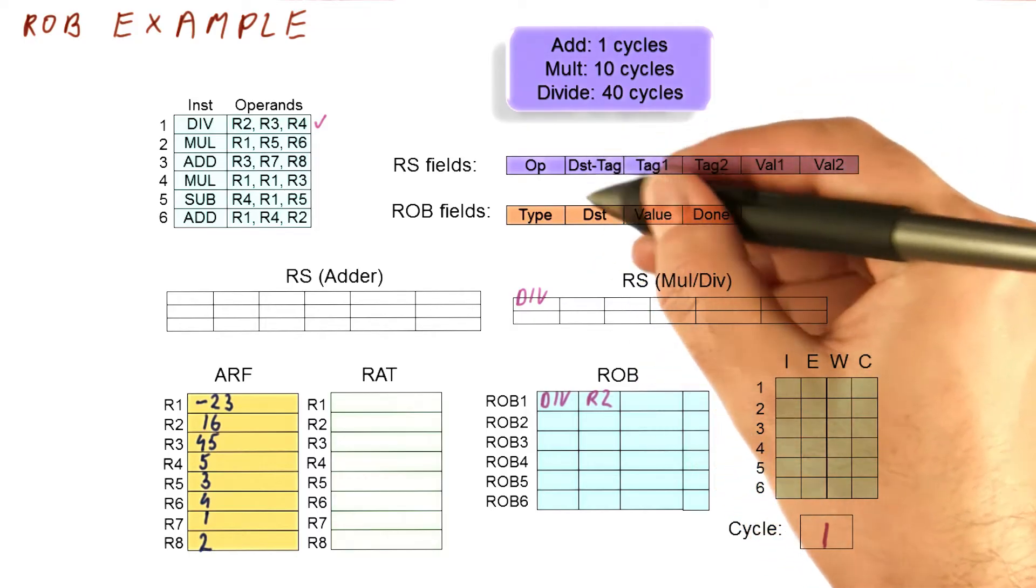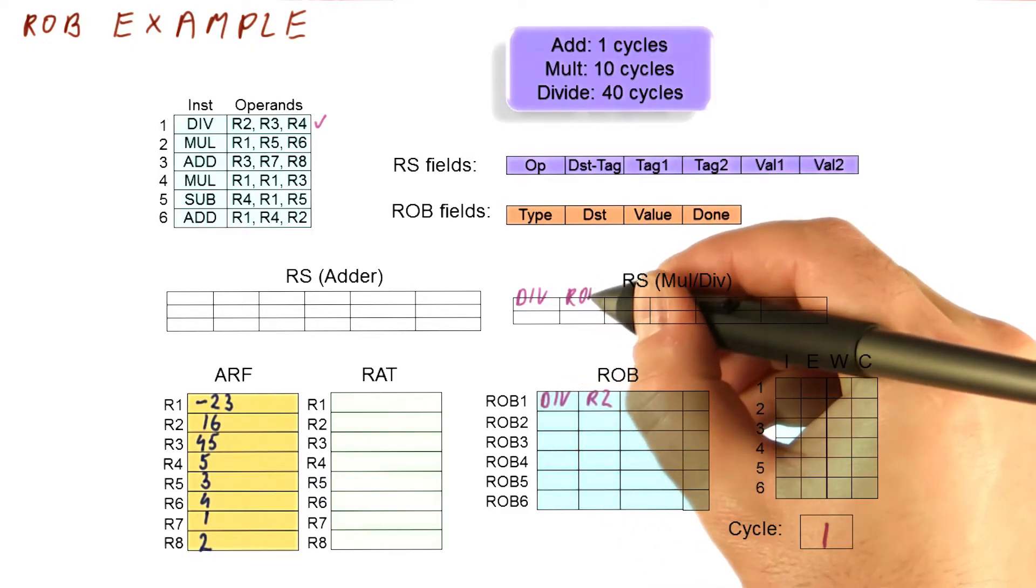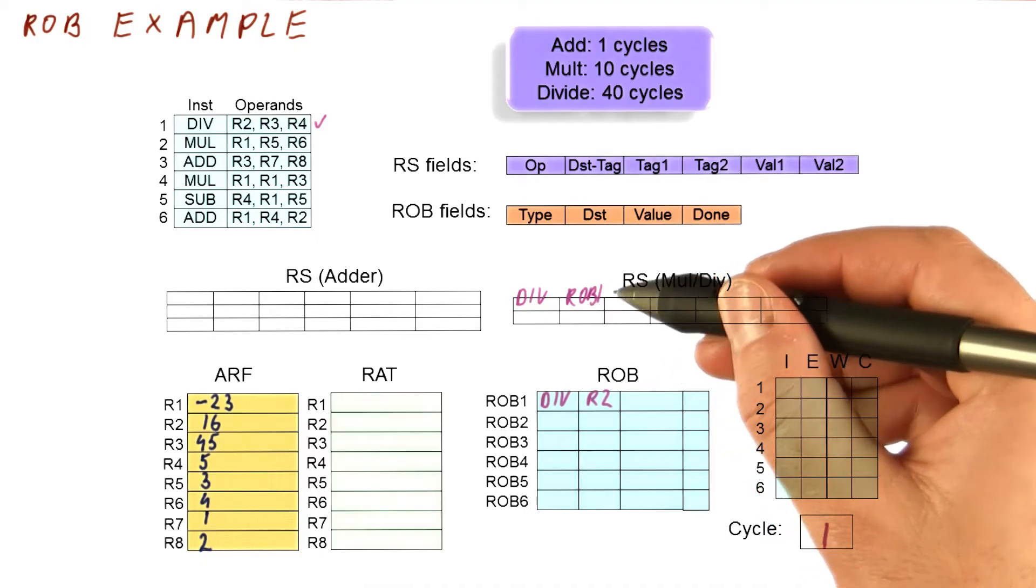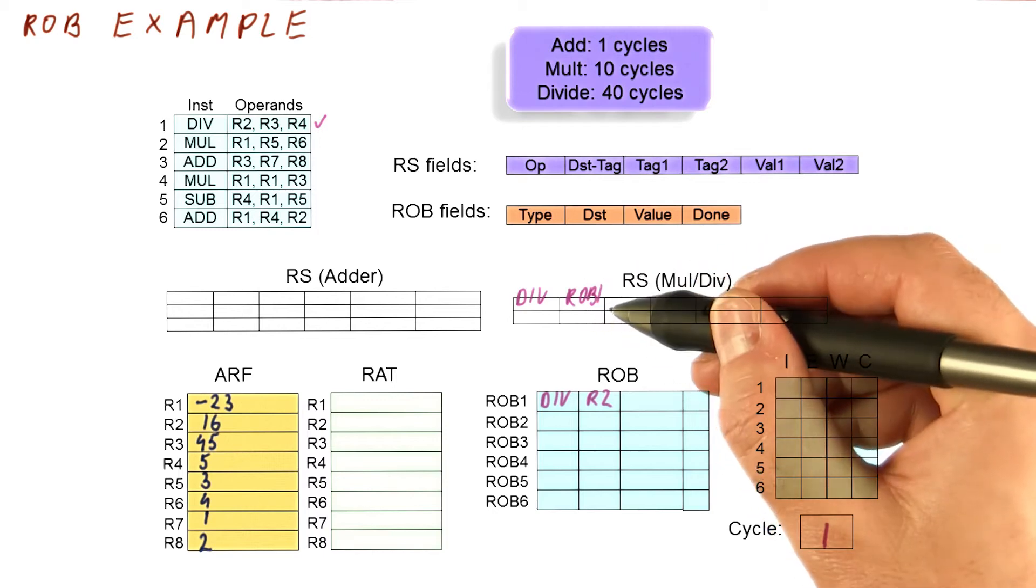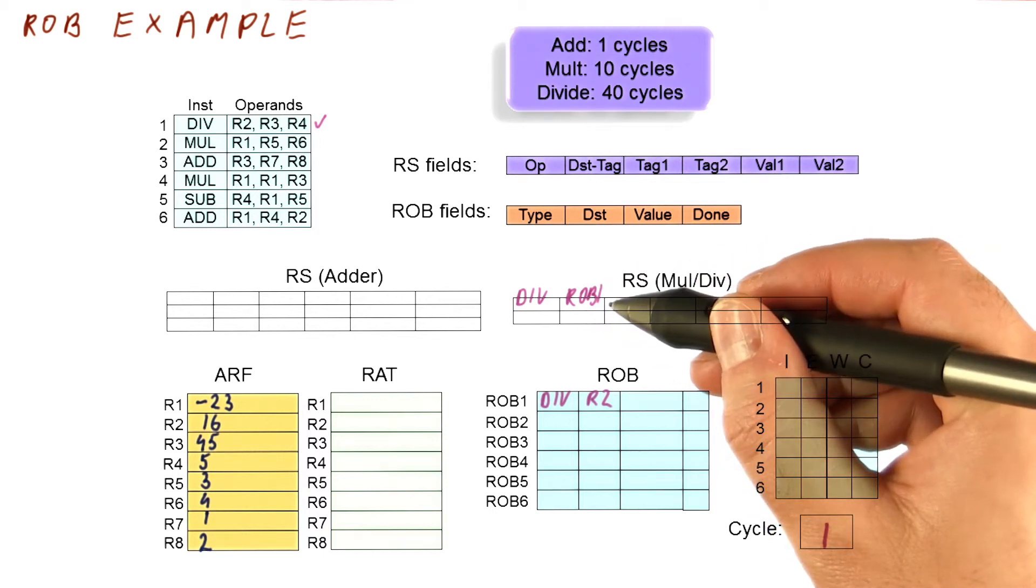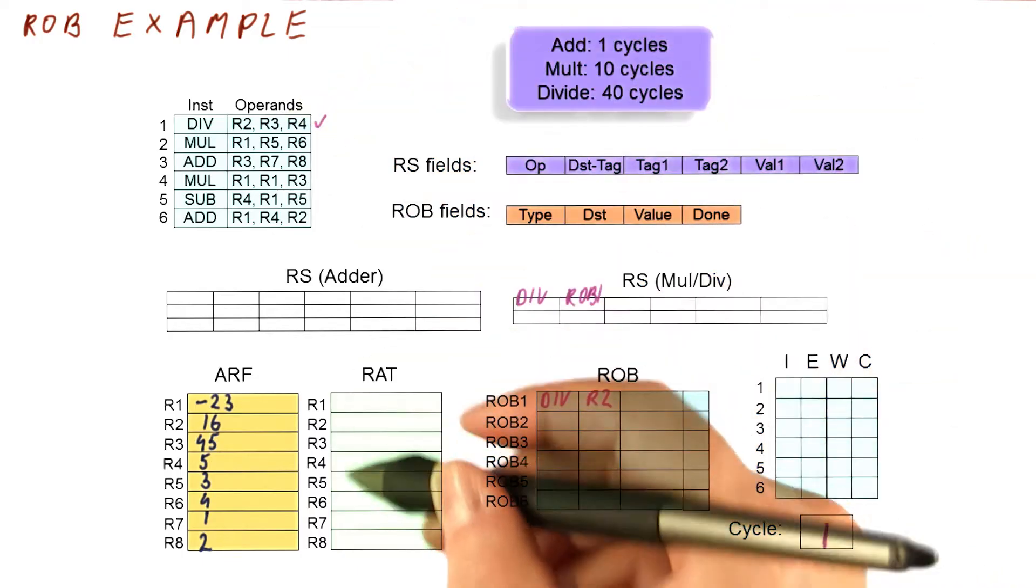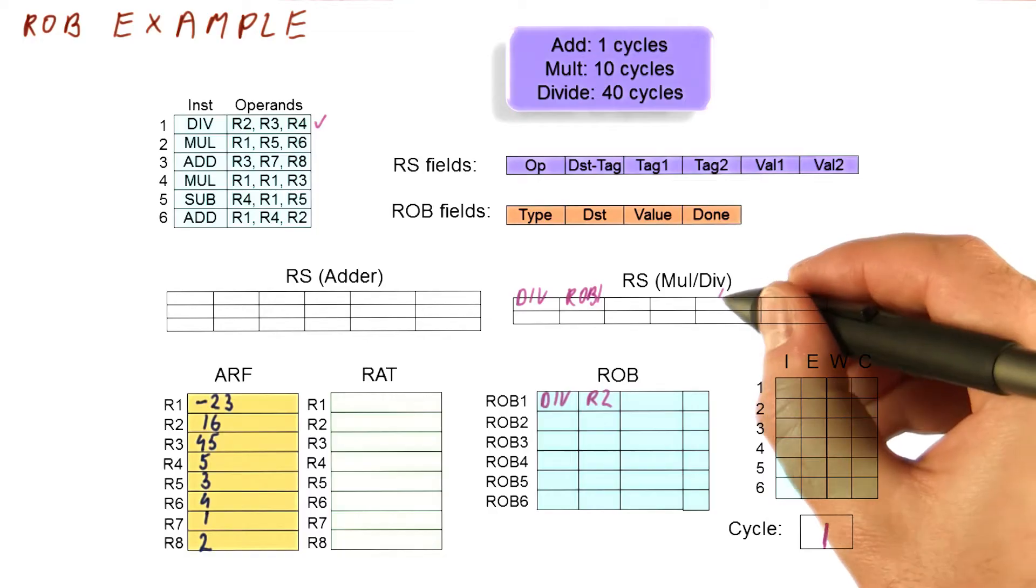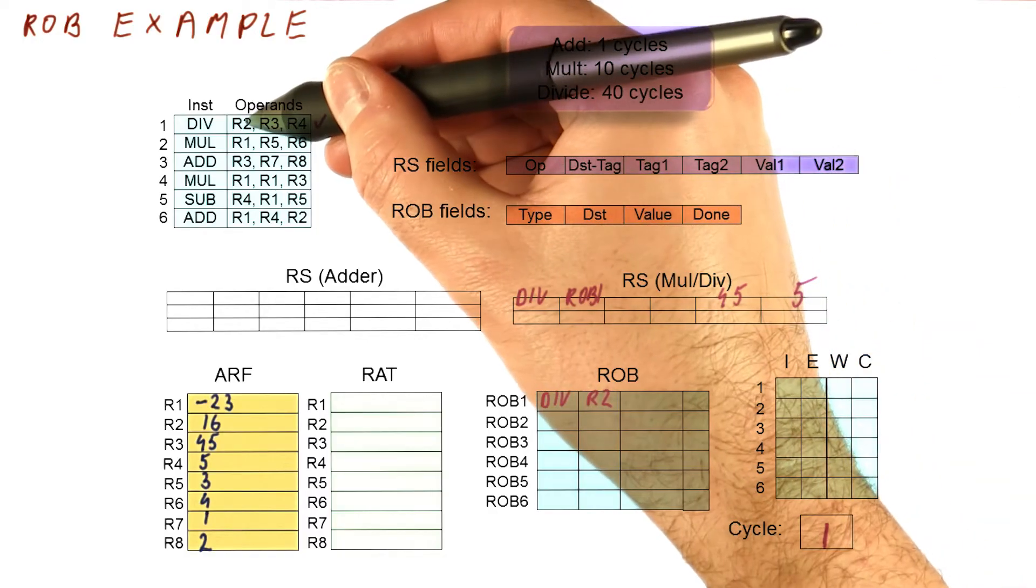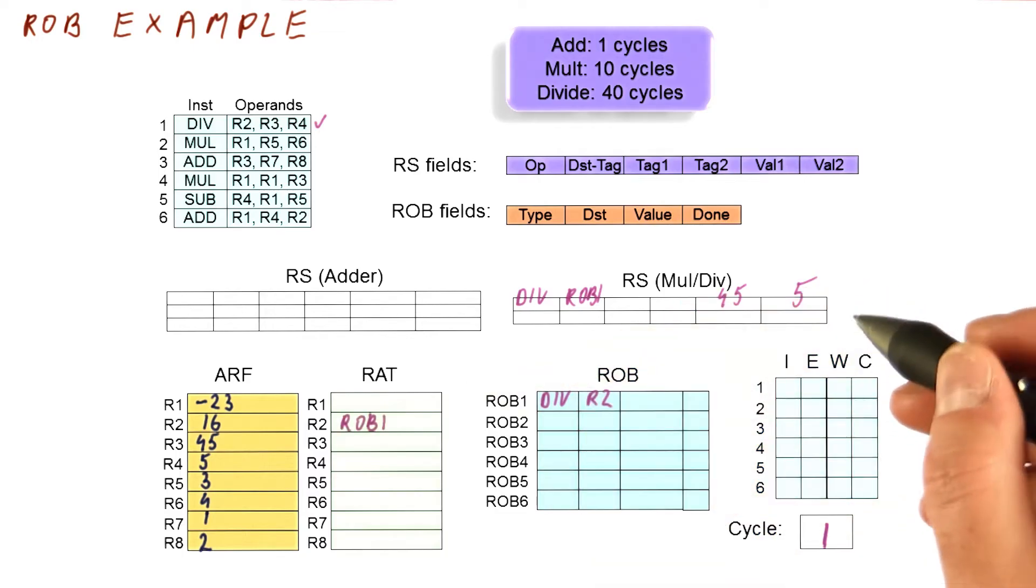We're going to write the destination tag in the reservation station. That's going to be ROB1 now. Remember that the value we broadcast the result with, basically the tag that everybody's trying to compare, is now going to be the ROB entry number, not the reservation station number. That's what allows us to free reservation stations very quickly. The R3 and R4 are going to be looked up here. We will find that it's 45 and 5 and write it here.